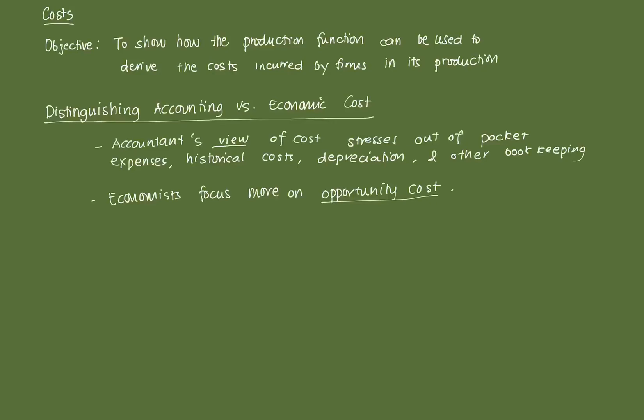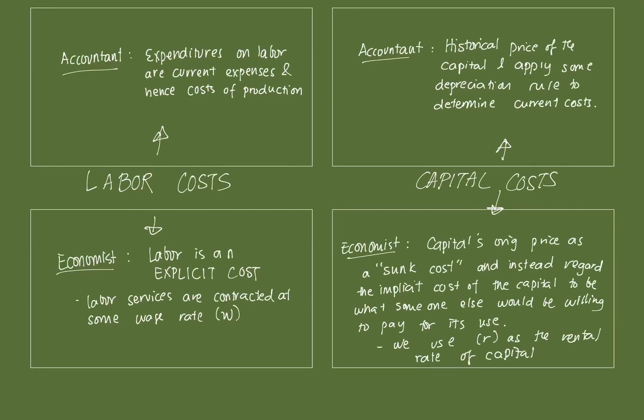In the last few videos, we restricted our case to a production function with two inputs: labor and capital. The way that the costing of labor and capital works differs slightly between accountants and economists. For labor costs, to an accountant, labor costs are expenditures on labor — current expenses and hence cost of production. It's pretty straightforward: labor costs have an entry in the balance sheet and are counted as costs. To an economist, it's roughly the same thing — it's an explicit cost.